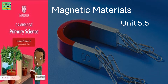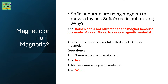Magnetic Materials Unit 5.5 — Magnetic or non-magnetic. Sophia and Arun are using magnets to move a toy car. Sophia's car is not moving because it is made of wood. Wood is a non-magnetic material. Arun's car is made of a metal called steel, and steel is magnetic.